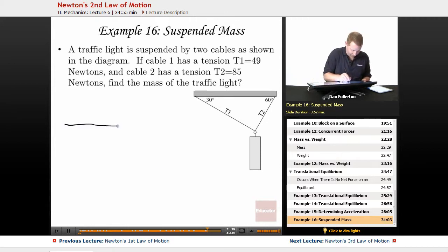X and y axes. Now, there's our object. Of course we have its weight, mg down. We have tension 1, T1, and if I do just a little bit of geometry over here, if that's 30 degrees, that must be 30 degrees, and over here if that's 60 degrees, that's 60 degrees.